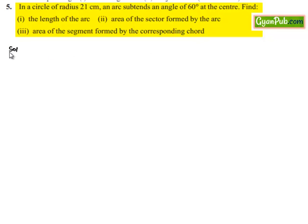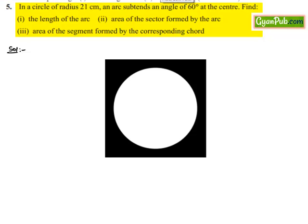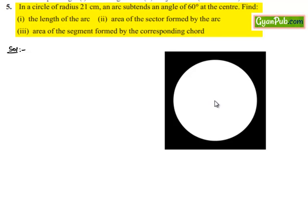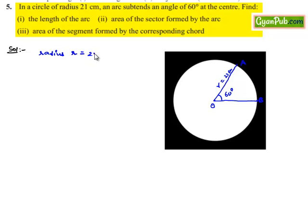Now moving on to the solution. Let us consider a circle with center O, and let AB be the arc such that it subtends an angle of 60 degrees at the center. The radius is given as 21 cm. So the given information is: radius r = 21 cm, and the angle subtended by the arc at the center = 60 degrees.